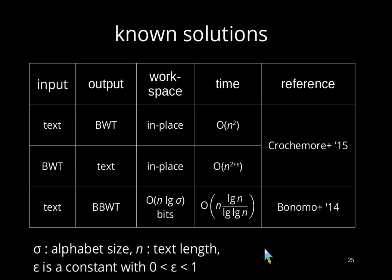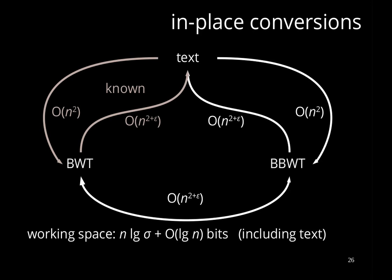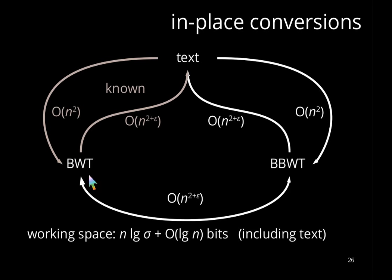So how does the landscape of in-place conversions look? On the left side we have the known algorithms. We can mimic these algorithms and copy them to the BBWT, obtaining the same time bounds as the BWT counterparts. Additionally, we create a connection between the BWT and the BBWT with conversions running in O(N^(2+ε)) time.